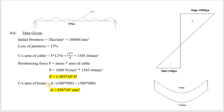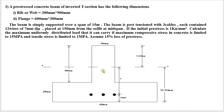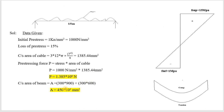Area of the beam = area of web + area of flange = (300 × 900) + (300 × 600) = 450 × 10³ mm².